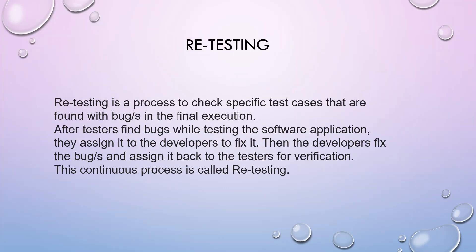Retesting is a process to check specific test cases that are found with bugs in the final execution. After testers find bugs while testing the software application, they assign it to the developers to fix it. Then the developers fix the bugs and assign it back to the testers for verification. This continuous process is called retesting.